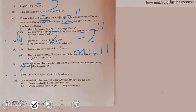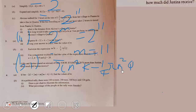We are asked to factorize the expression πn²k minus one-quarter πn²q. So we factor out πn², giving us πn² times the bracket (k minus q over 4).